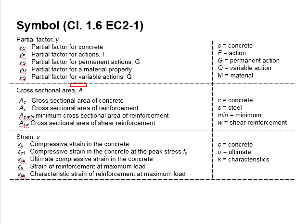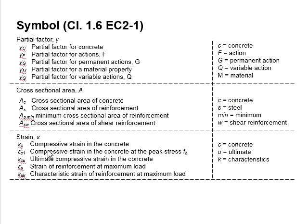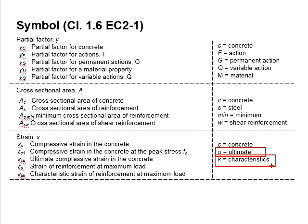The cross-sectional area is represented by A. S represents the steel. Min represents the minimum. As for the strength, it is represented by f. U represents the ultimate conditions. K represents the characteristics.